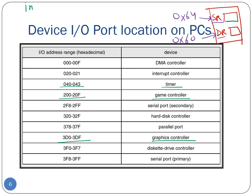So by using these special I/O instructions provided by the architecture — such as 'inb' for reading one byte and 'outb' for writing one byte — we can communicate with the I/O devices using the port address.